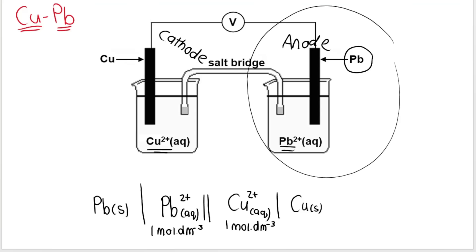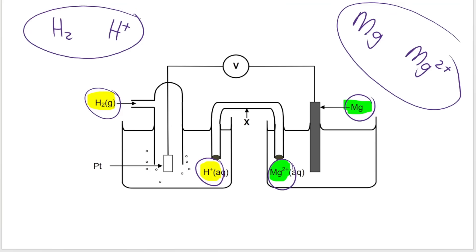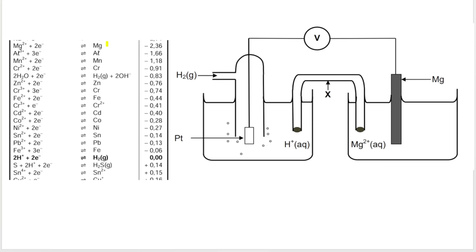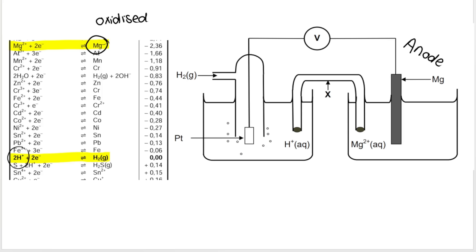What about something that involves a gas? In the previous video, we said that magnesium was oxidized because it's higher up on the table — it's a stronger reducing agent. So magnesium is oxidized, making it the anode. Remember: anox — anode oxidation. The hydrogen ions are being reduced, so this is the cathode — red cat, reduction at the cathode.